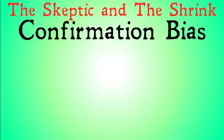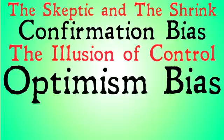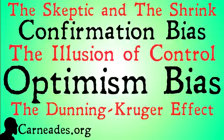That was confirmation bias. Next up, we're going to be looking at the illusion of control, then optimism bias, and then the Dunning-Kruger effect. Watch this video and more here at carneades.org — and stay skeptical, everybody.